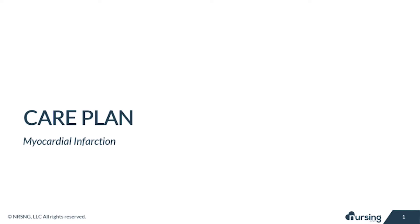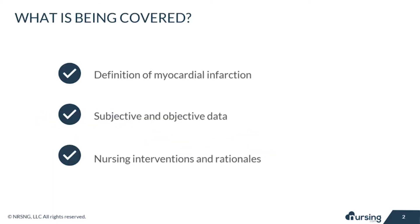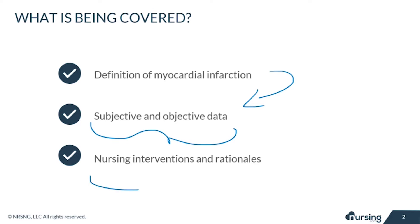In this lesson we are going to take a look at the care plan for myocardial infarction, or MI. We will talk about the pathophysiology and etiology of an MI, as well as subjective and objective data your patient may present with, and nursing interventions and rationales for this issue.